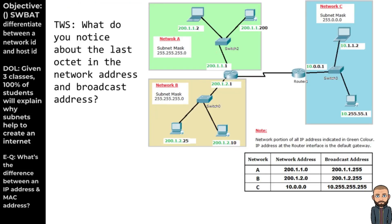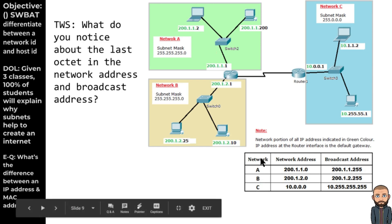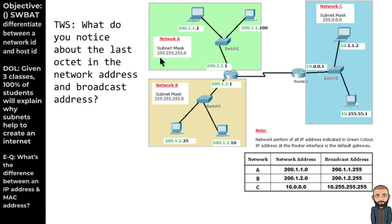Here's another question: based on this picture alone, what do you notice about the last octet in the network address and broadcast address? These are not IP classes — this is showing network A, B, and C as separate networks. Network A has a Class C subnet mask of 255.255.255, so this network can hold 254 unique IP addresses, though it looks like they only have two. The switch right here doesn't appear to have an IP address — that's an extra credit question worth thinking about.